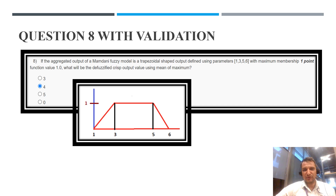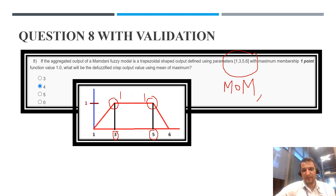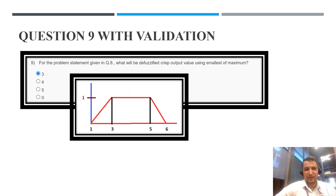Question number 8: the aggregated output of the Mamdani fuzzy model is trapezoidal with parameters 1, 3, 5, 6. At points 3 and 5 the maximum membership value equals 1. What will be the defuzzified crisp output using mean of maxima? Mean of maxima means we average the points where membership value is 1, so (3 + 5) / 2 = 4. The correct answer is 4.